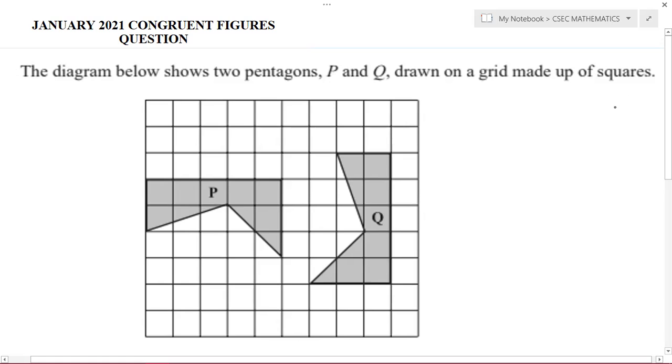The diagram below shows two pentagons P and Q drawn on a grid made up of squares. You can see the diagrams below here labeled P and Q.